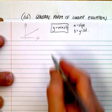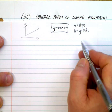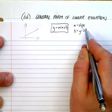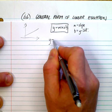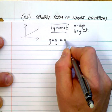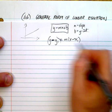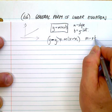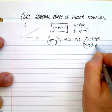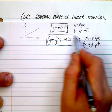Another form: say you're given a random point and the slope — you can find the equation using the point-slope formula, which looks like this: y minus y1 equals m times (x minus x1), where m is the slope and (x1, y1) is the given point.